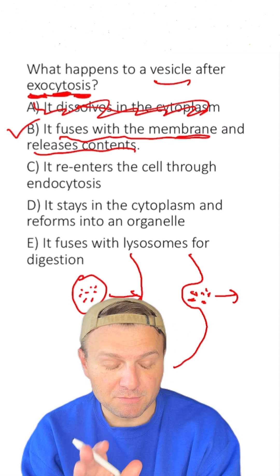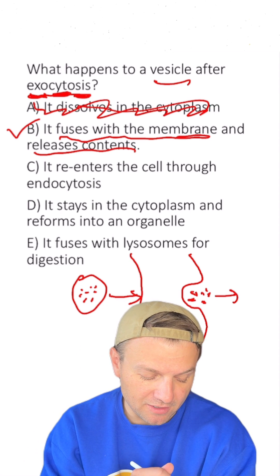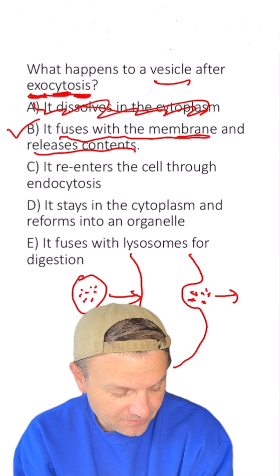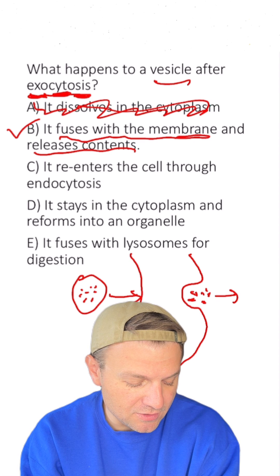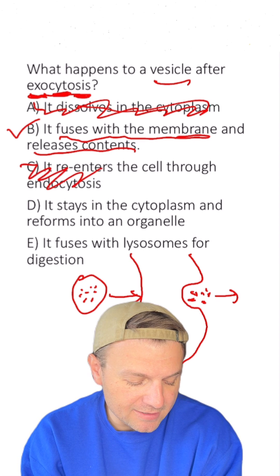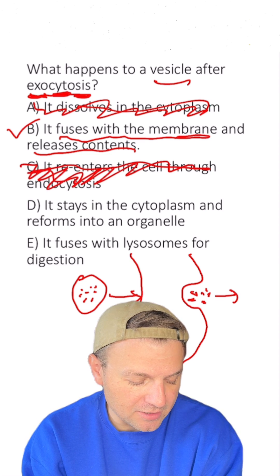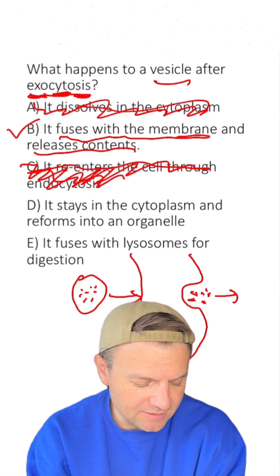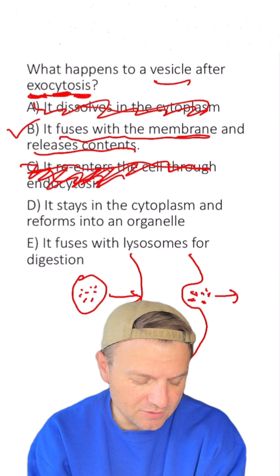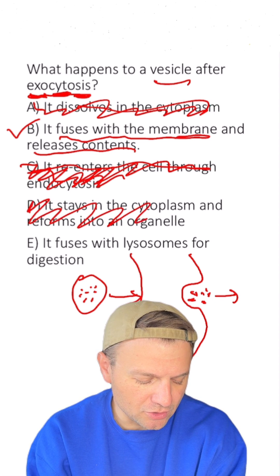I think that is the answer, but let's look at the other choices. C says it reenters the cell through endocytosis — no, we're not talking about that. D says it stays in the cytoplasm and reforms into an organelle — nope, that's not true.